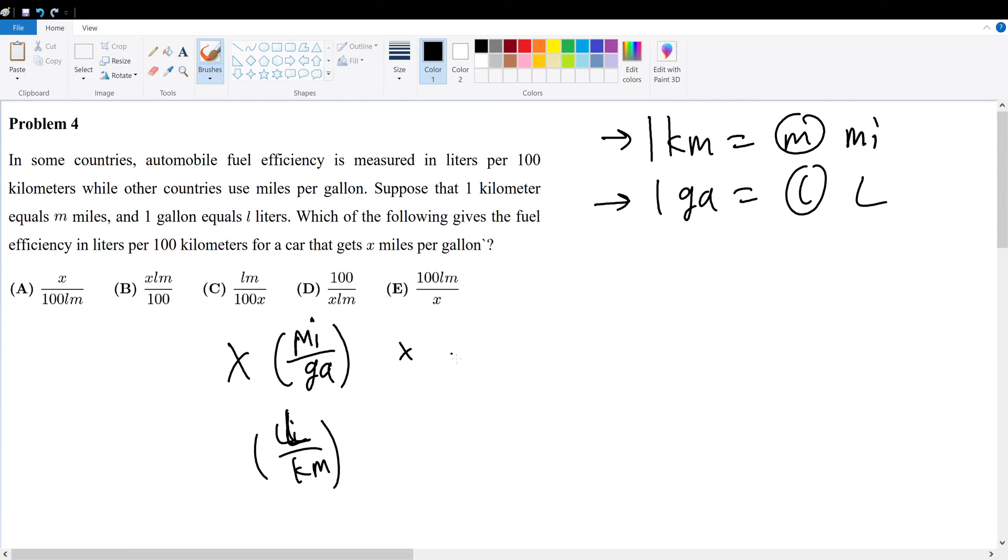We know that for every m miles, we get one kilometer and that for every one gallon, we get l number of liters. Now, the reason why I ordered this in the way that I did is because miles and miles gets canceled. The gallons and gallons gets canceled. We're left with only the terms of liters and kilometers, which is what we want.